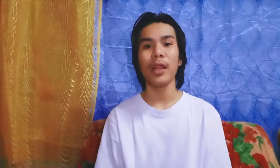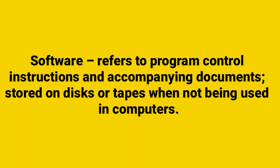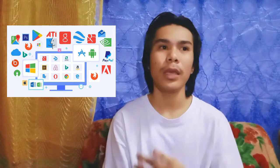Now we're going to talk about software. Software refers to programs, control instructions, and accompanying documents stored on computers when not being used. Software is something you can't touch but you can use. Examples include built-in programs like Windows, Microsoft Office, image editing, or applications that you need to install.